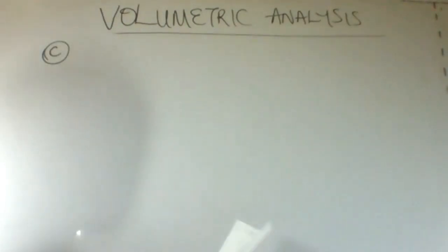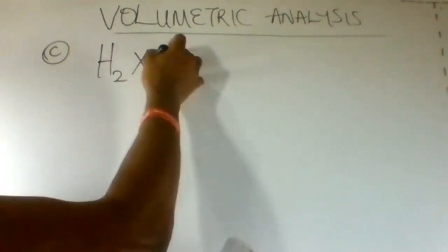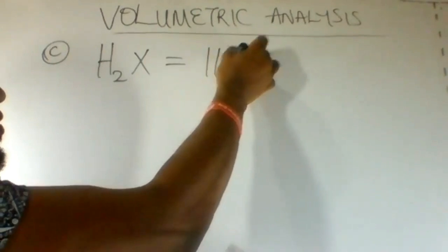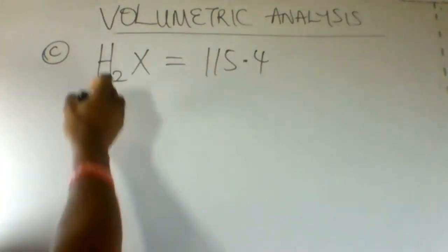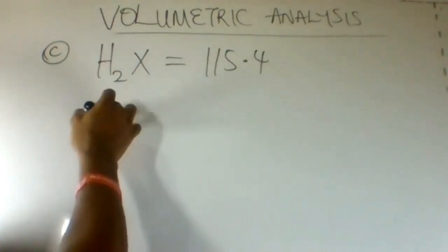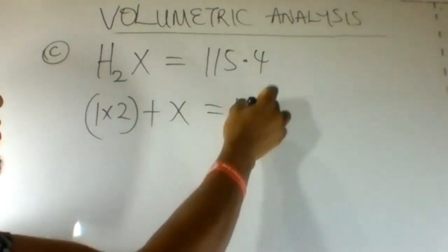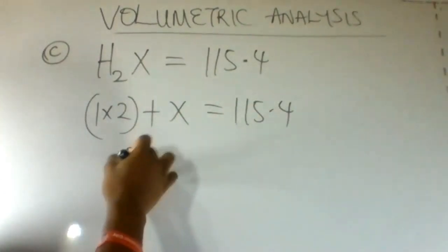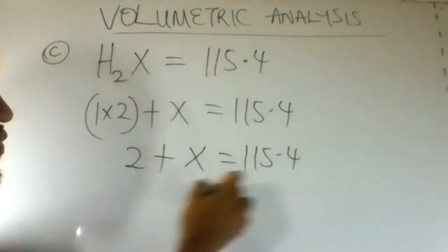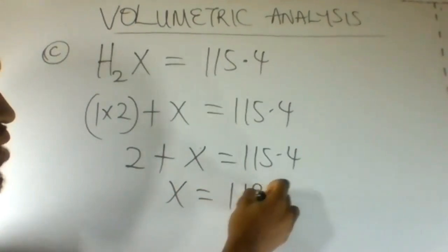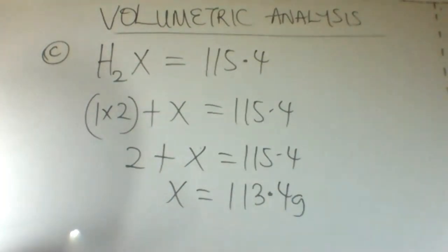To find the value of x, we know that H2x is 115.4 grams per mole. H2 contributes 1 × 2, plus x, equals 115.4. Therefore, 2 plus x equals 115.4, and x equals 113.4 grams.